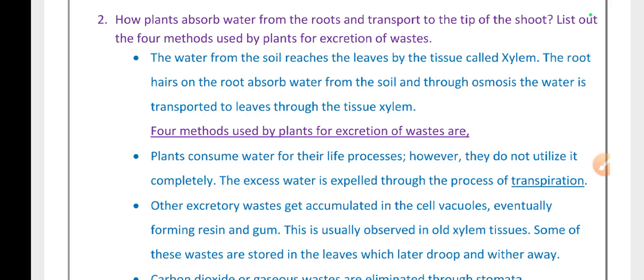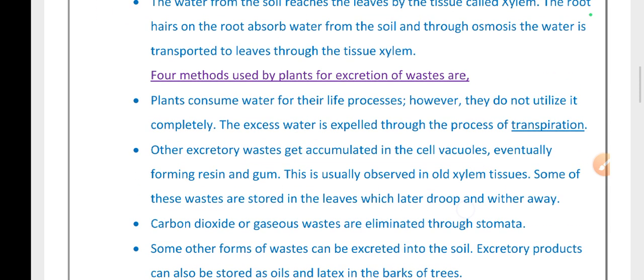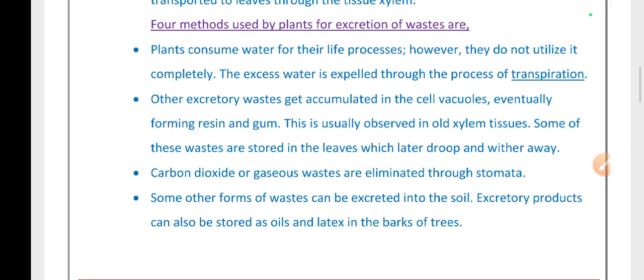Four methods used by plants for excretion of wastes are: First, plants consume water for their life processes; however, they do not utilize it completely. The excess water is expelled through the process of transpiration.